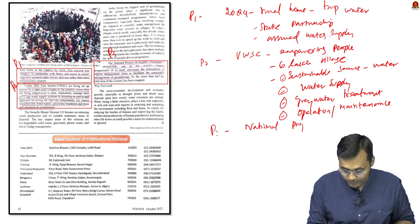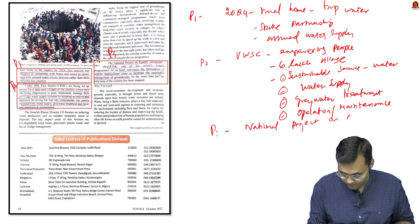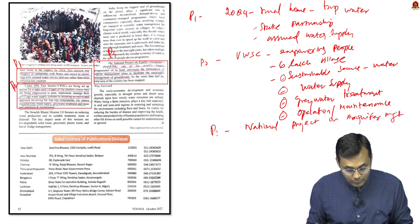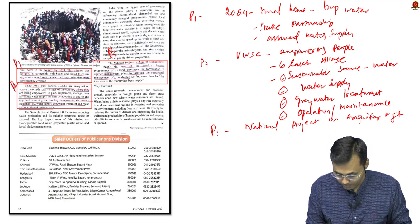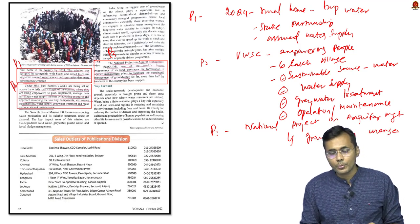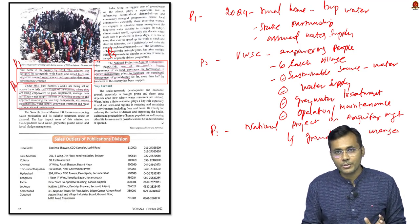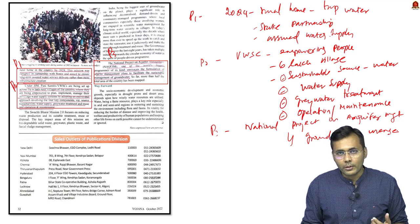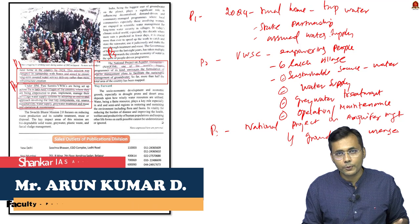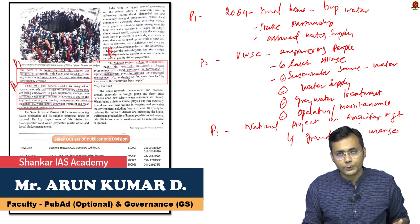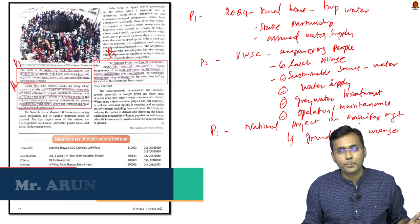India also has the National Project on Aquifer Management — one of the biggest programs in the world — focused on formulation of aquifer management for sustainable use of groundwater. This information regarding water governance can be used especially for essay topics on rural development, importance of water in society, or any related answer writing.